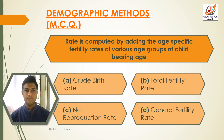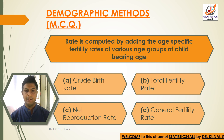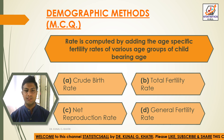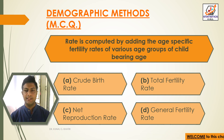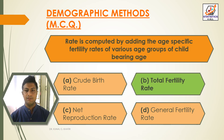Next question: which rate is computed by adding the age-specific fertility rates of various age groups of child-bearing age? Option A: crude birth rate, Option B: total fertility rate, Option C: net reproduction rate, Option D: general fertility rate. The answer is Option B — total fertility rate.